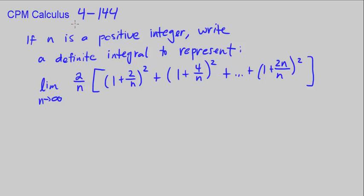This is CPM Calculus, Chapter 4, number 144. So here, if n is a positive integer, write the definite integral to represent the limit as n approaches infinity of 2 over n times this series here.